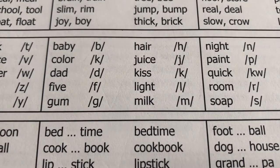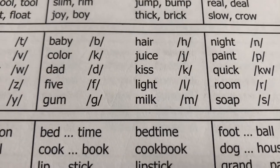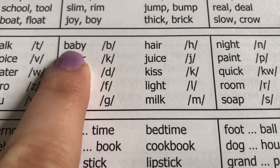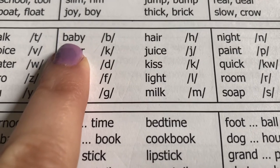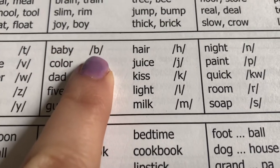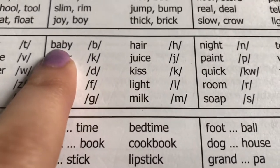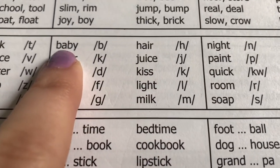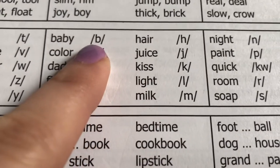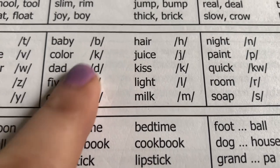Now we are moving on to onset fluency — that's the very first sound you hear in the word. So here's our first one: Baby. Your child would say Baby — Buh. You can also ask your child: does the word baby start with the kuh sound? Yes or no? And hopefully they would say no — baby starts with the buh sound.